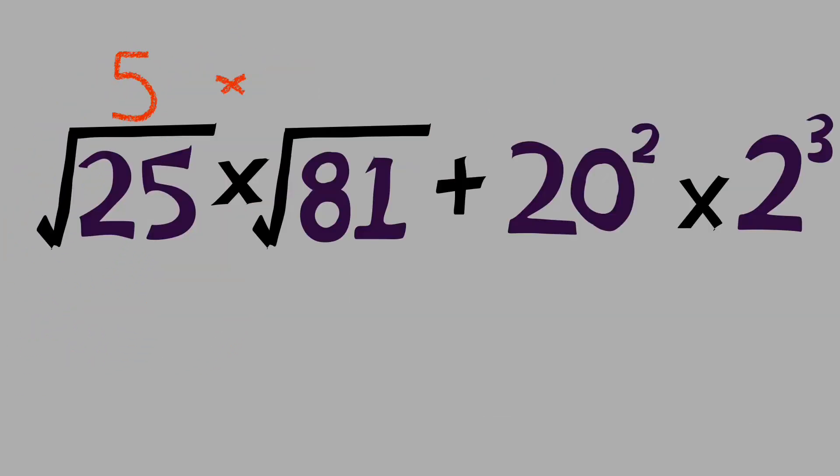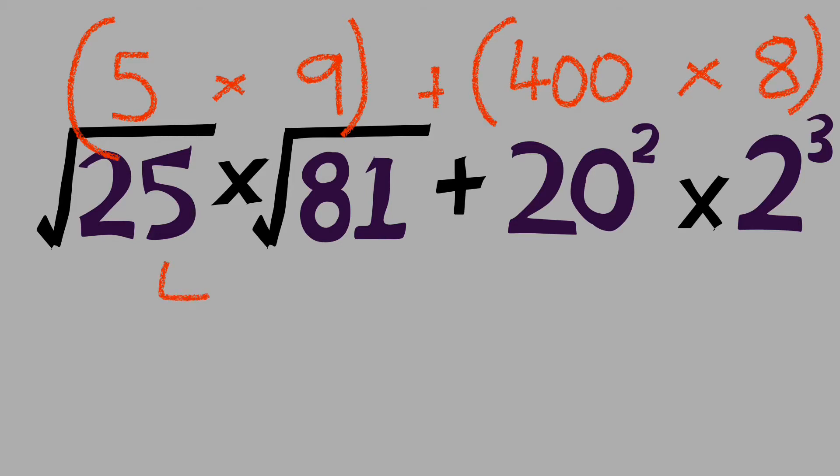Square root of 25, that's 5. Square root of 81, that's 9. On the left we have 5 times 9. On the right, 20 squared, 20 times 20, that's 400. 2 to the power of 3, 2 cubed, that's 8. So on the right we've got 400 times 8. 5 times 9 on the left, that's 45, plus 400 times 8, that's 3200.